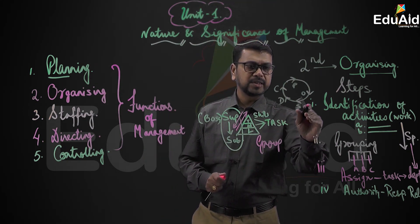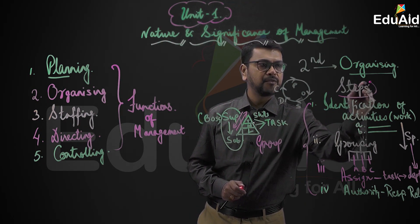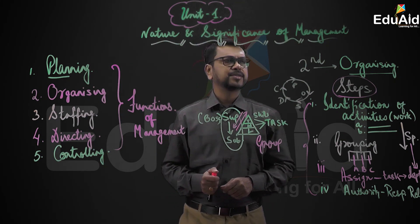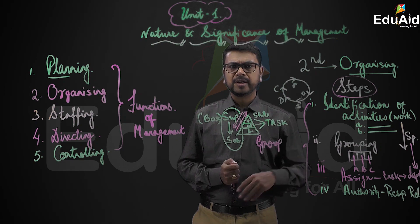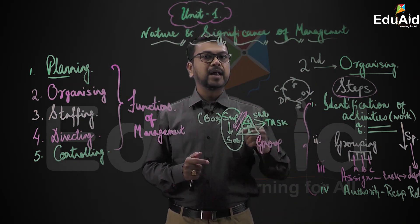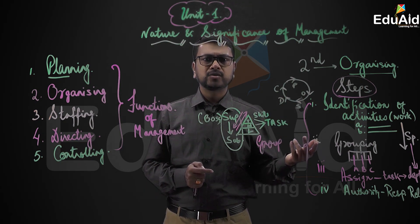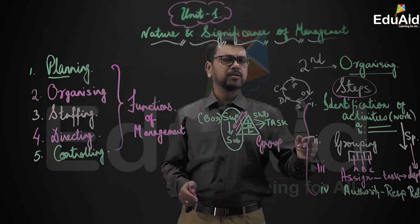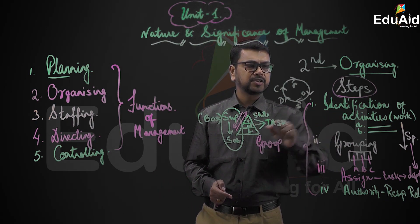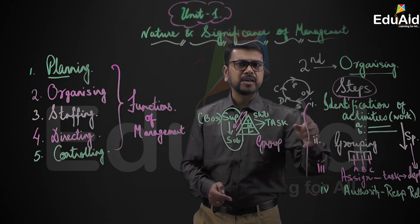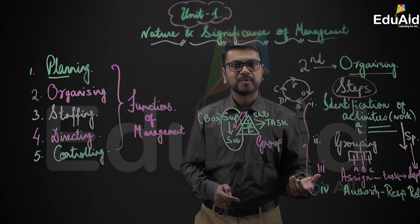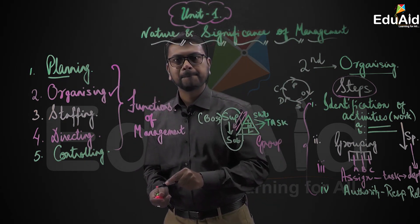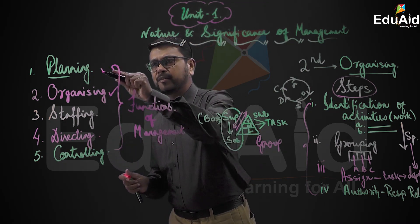So these are your four steps of organizing. It's time to recap and write the questions. The question could be: explain the second function of management, or broadly, explain in detail the various functions of management. If it's two or three marks, explain all functions with one statement giving the meaning. If asked individually — what are the steps of organizing? Or, identification of activities is which step in the function of management? If you are thorough in your work, you will say it is organizing.